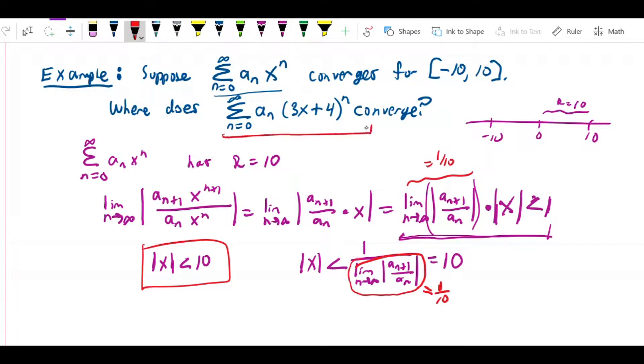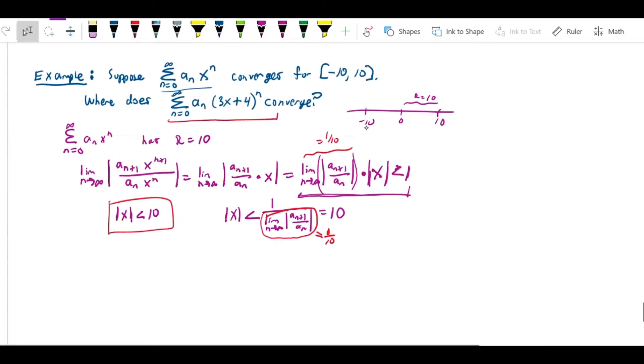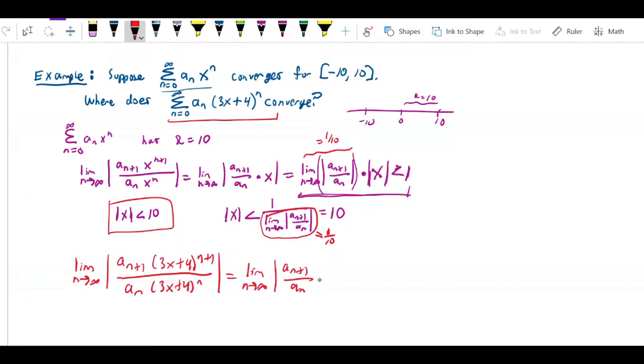Now let's try it with this series, and you'll see that we can use that fact. So this is going to be the limit as n approaches infinity of a_{n+1}(3x+4)^{n+1} over a_n(3x+4)^n. This simplifies to the limit as n approaches infinity of a_{n+1} over a_n times (3x+4), once we divide everything out.